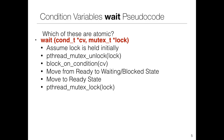Which of these pseudocode steps are atomic? Of these six instructions, two execute together. Steps two and three—the unlock happens atomically with the blocking. The next pair is almost the same.